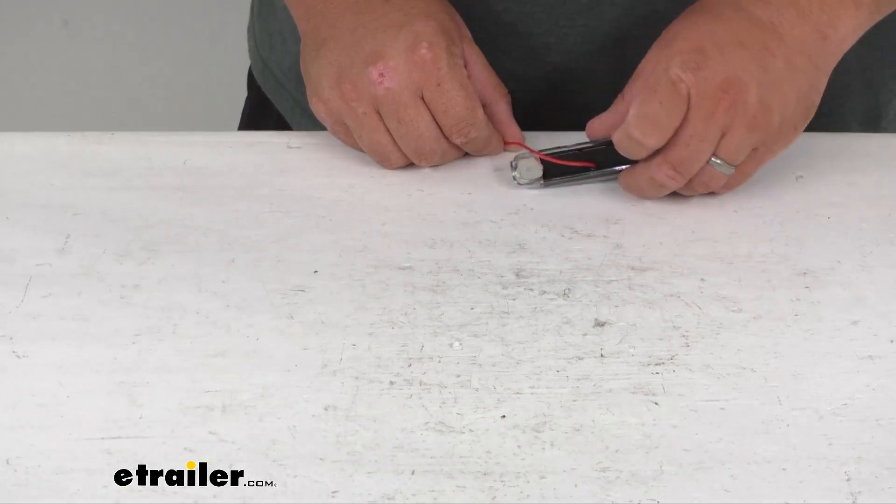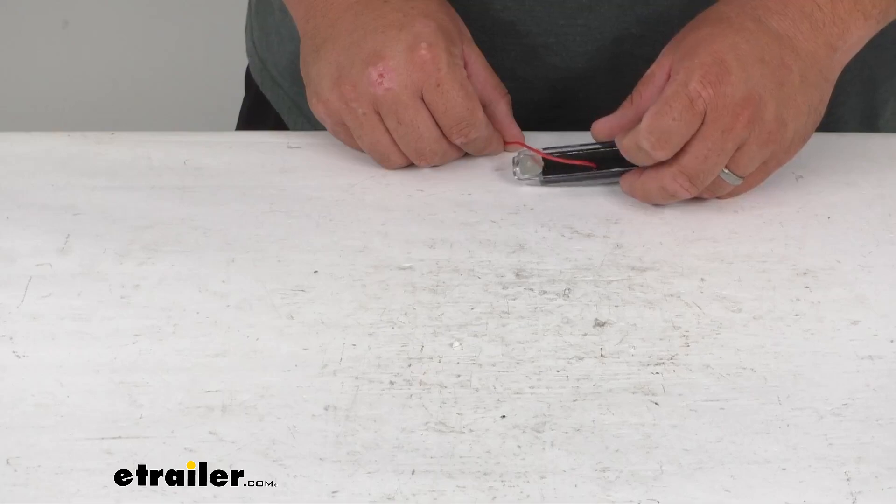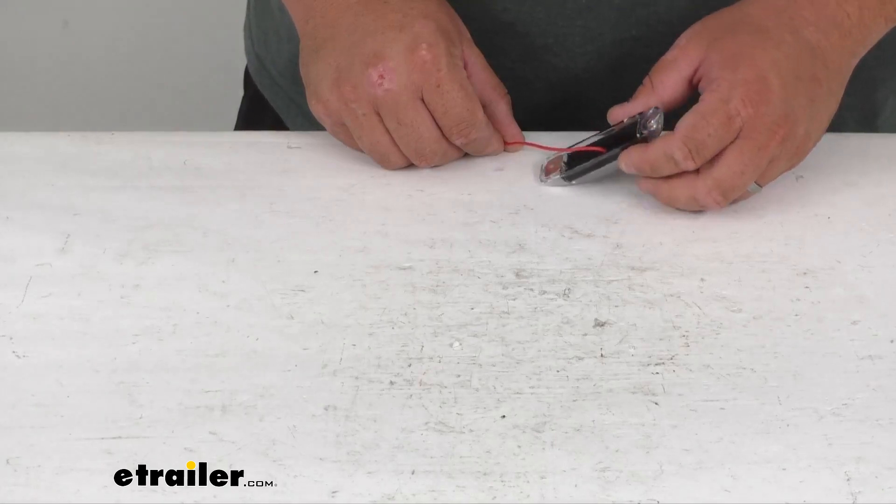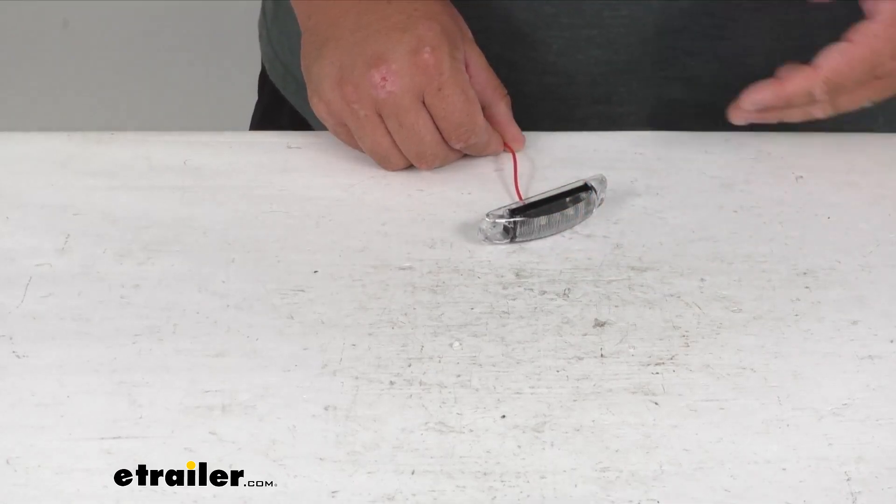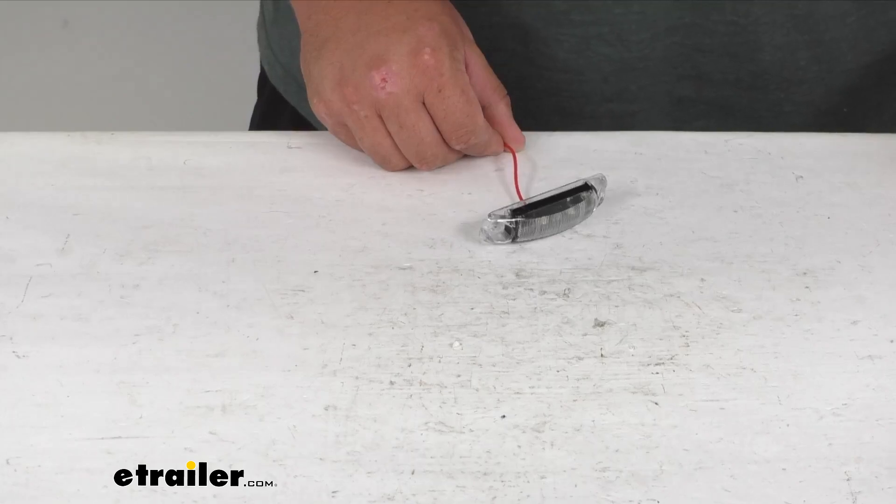You can see this side has the built-in ground already in place, so when you put a screw, nut, or bolt through there, it grounds to the trailer frame. Then you simply hook up the power wire using the included 9-inch pigtail.